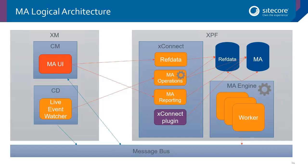The final piece of the architecture, added in 9.0.1, is the message bus. Contrary to popular belief, this is not part of EXM — it's part of the platform. The message bus builds on Rebus, an open-source message bus implementation, providing asynchronous communication. In Sitecore it's currently only used by EXM, but it solves a general problem of how to communicate between roles — for example, between CD and CM, or between the marketing automation engine and CM. You should expect other parts of the platform to use this in the near future.